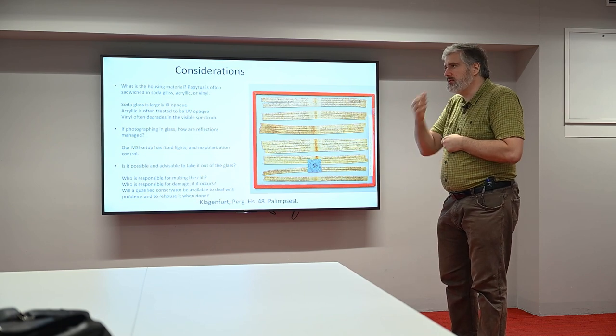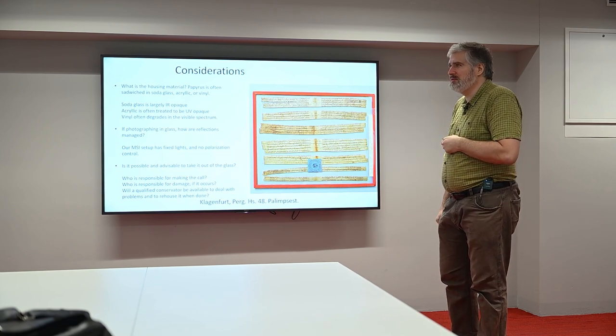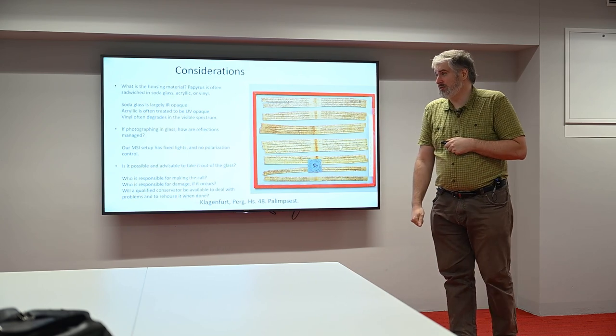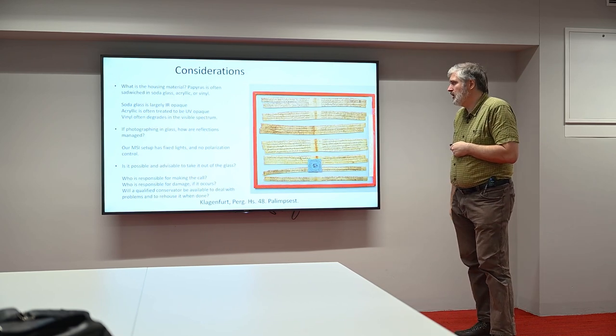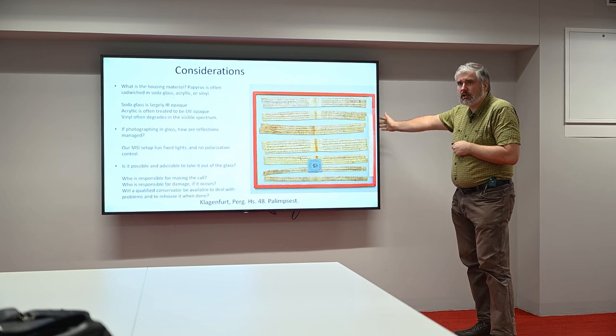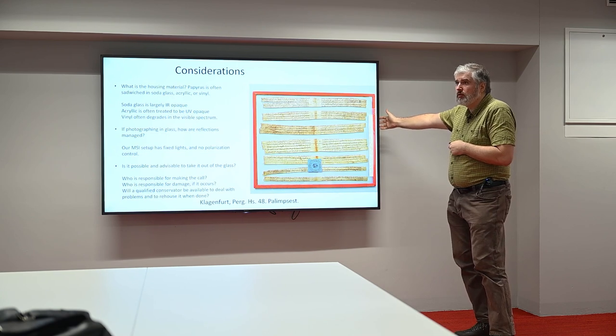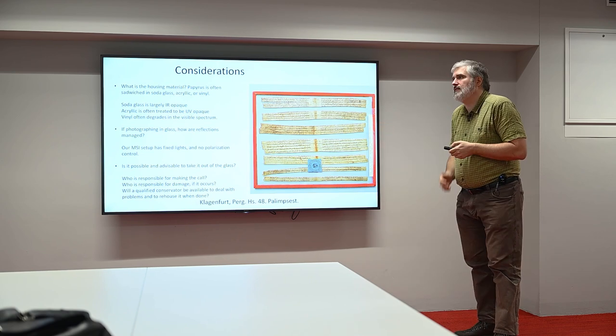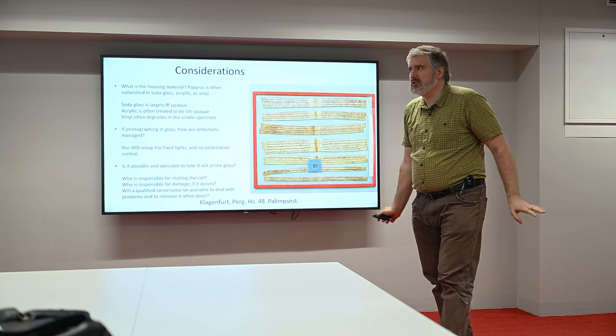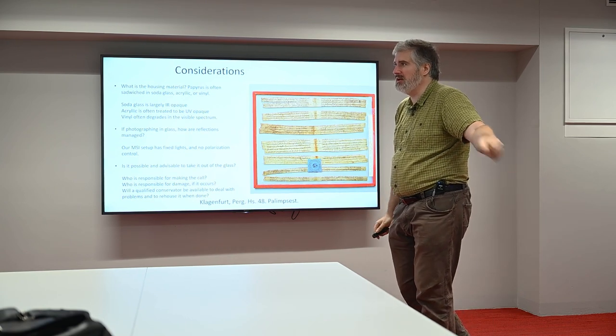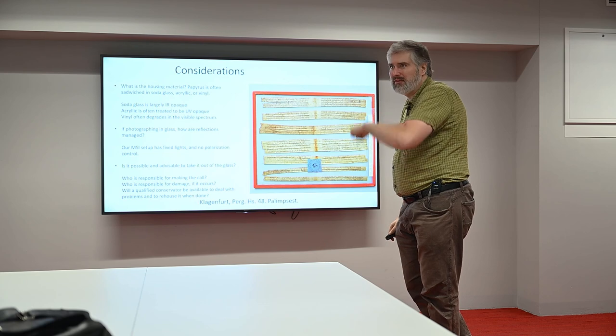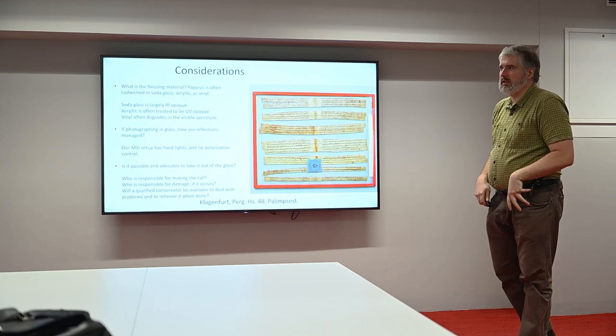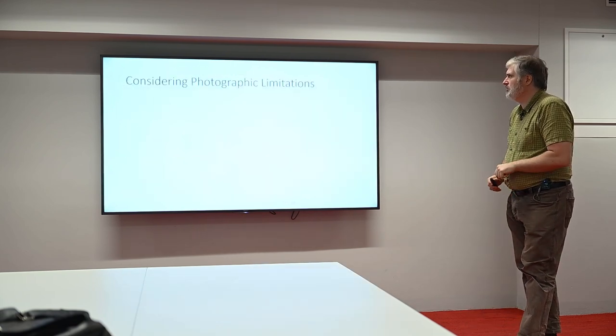How are reflections managed? We don't actually have the specific filter that you use for controlling polarization on our setup. So is that going to be a problem in our setup? Is it possible to take it out of the glass? Is it advisable? Who, from an institutional perspective, has to be there to take it out of the glass, to put it back in? Does that fit into their conservation priorities? All of these need to be nailed down before somebody puts this in a suitcase, into a car, drives over to Graz, and we put it under our camera. And you're always going to have issues like this that you need to consider before doing it.